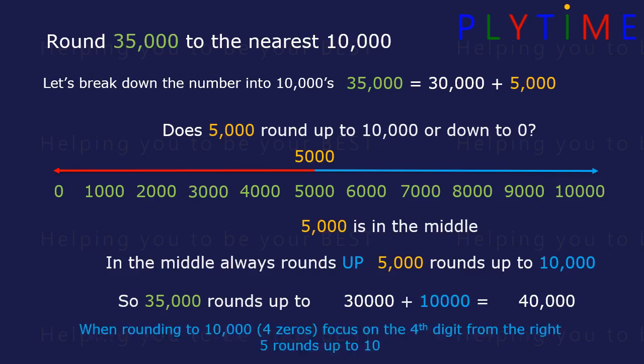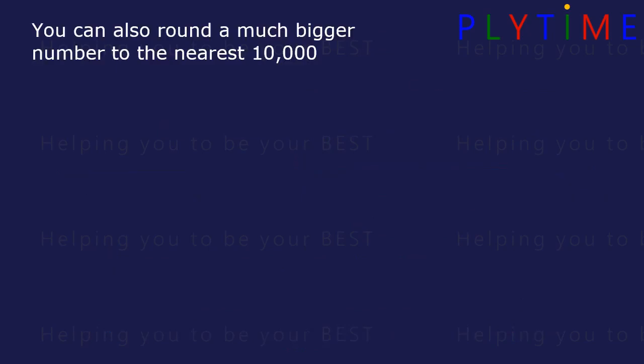When rounding to 10,000 with four zeros we focus on the fourth digit from the right. Here the 5, and 5 rounds up to 10. You can also round a much bigger number to the nearest 10,000.